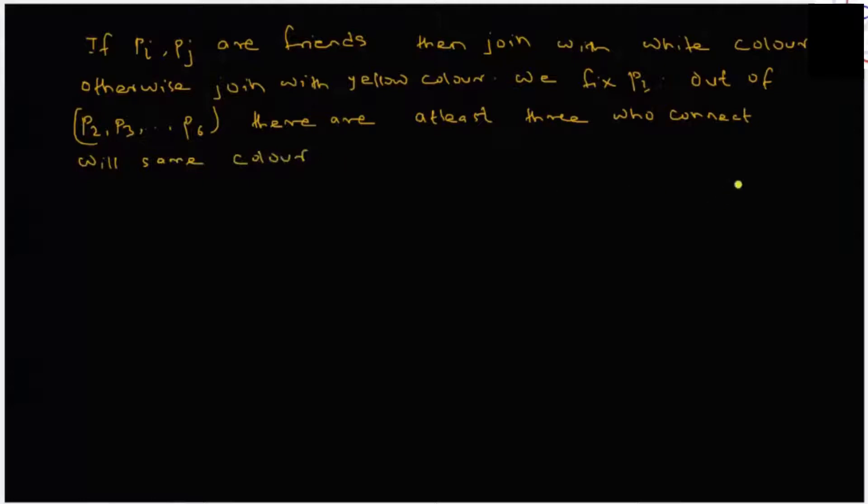See, this is P1. Take P2, P3, P4, P5, and P6. Then there can be at least three of the same color, right? Three can be white or three can be yellow. So there are at least three who connect with the same color.